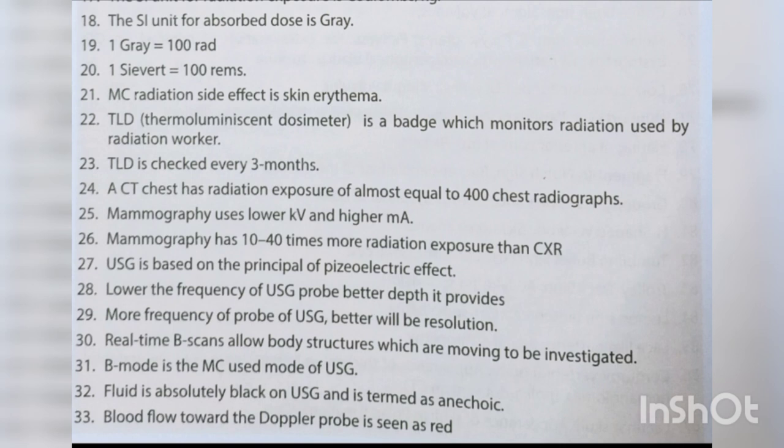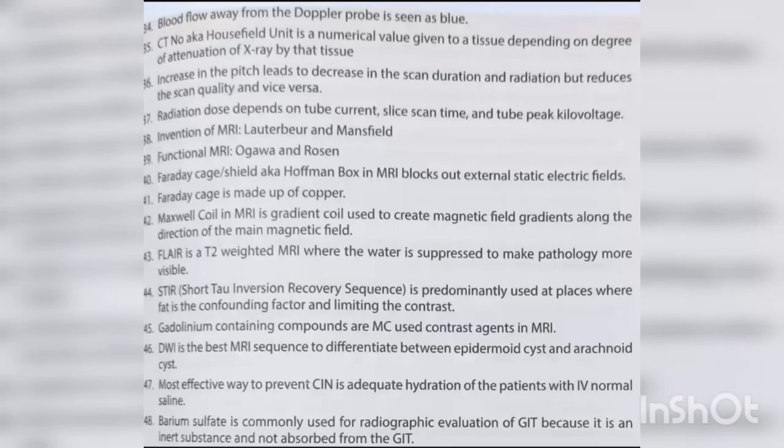Lower frequency of the USG probe provides better depth; higher frequency provides better resolution. Real-time B-scans allow moving body structures to be investigated. B-mode is the most commonly used mode of USG. Fluid is absolutely black on USG and is termed anechoic. In Doppler, blood flow towards the probe is seen as red; flow away is seen as blue.